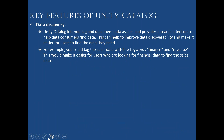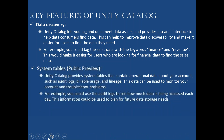The fourth feature is 'Data Discovery.' Unity Catalog lets you tag and document data assets and provides a search interface to help data consumers find data very easily. For example, you could tag sales data with keywords like 'financial' or 'revenue,' making it easier for users to find the sales data using those keywords. When they search, they get all datasets tagged with those terms, making it easy to identify data across multiple workspaces.